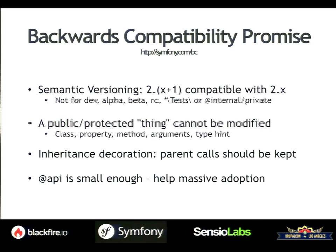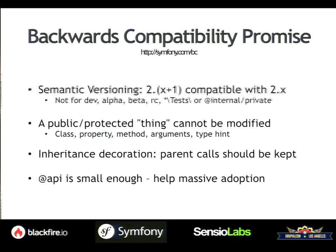In Symfony 3 we're going to drop compatibility with older PHP versions, but right now we have about 10 methods that are public but really private. Anything public or protected — classes, properties, methods, arguments, type hints — cannot be modified in any way. For any given set of inputs we must have the same outputs. That's the biggest problem we are facing.